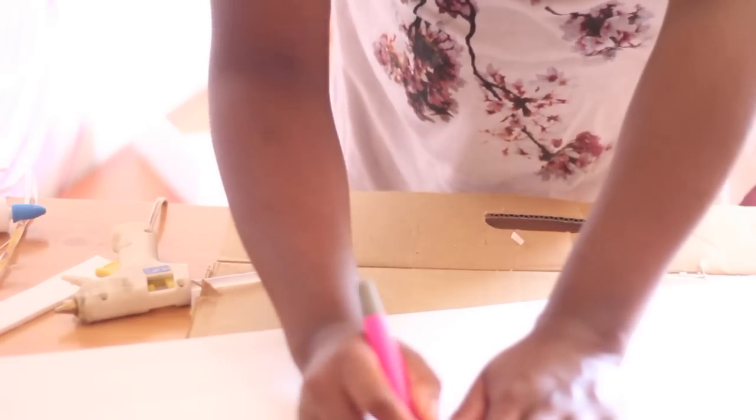Option number two, your shadow box back is going to be the exact same good old fashioned foam board, glue and cardstock. The only difference on option two is the frame. This frame is going to be made out of foam board just like the back.